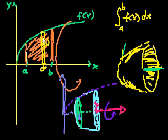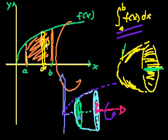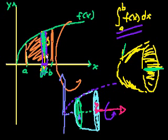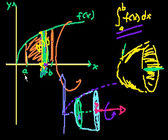We use the exact same principle. When we figured out the area, we figured out the area of each of these small rectangles, then took an infinite sum. To do the volume, instead of having each rectangle contribute an area, we rotate each of these rectangles around the x-axis. So if this is one of the rectangles — it has width dx and height f of x — if I were to rotate this rectangle around the x-axis, what do I end up with?